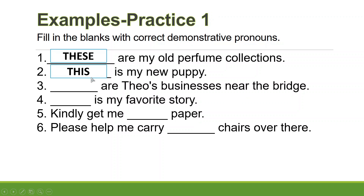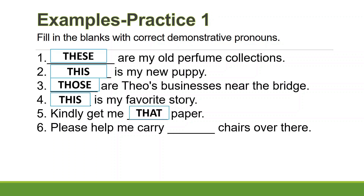Number three: '_____ are Tio's businesses near the bridge.' The answer is 'those' — many things far away from you. Number four: '_____ is my favorite story' — answer is 'this.' Number five: 'Kindly get me _____ paper' — answer is 'that.' Number six: 'Please help me carry _____ chairs over there' — answer is 'those,' because they are far away and plural.